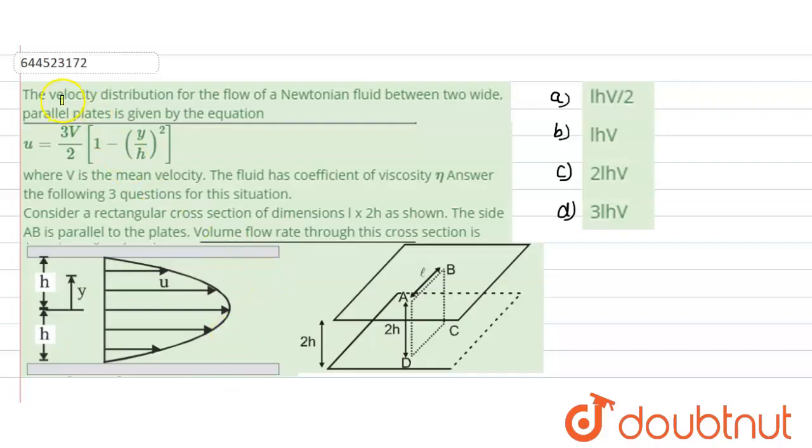In this question, the velocity distribution for the flow of a Newtonian fluid between two wide parallel plates is given as u equals 3V divided by 2, times 1 minus (y/h) squared, where V is the mean velocity and the fluid has a coefficient of viscosity η.